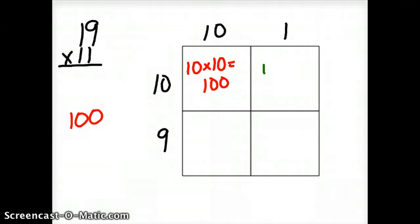We'll still have 10 times 1, and that's still going to equal 10. We'll also still have 9 times 10, which still equals 90.